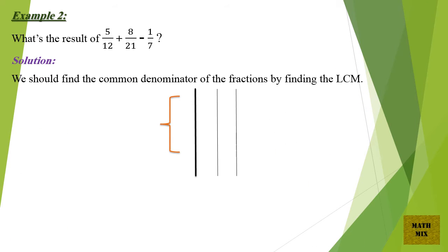Example 2: What is the result of 5/12 + 8/21 − 1/7? Solution: We should find the common denominator of the fractions by finding the LCM of 12, 21, and 7.